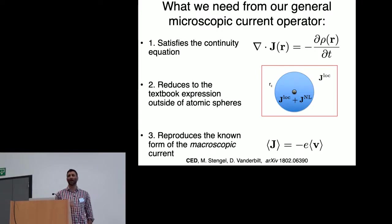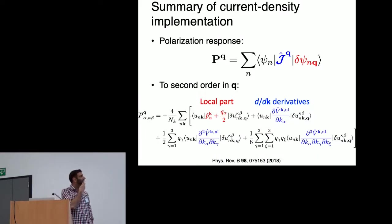Everything is in this paper. But what we can show is that first of all, that form of the current density satisfies the continuity equation. It also reduces to the textbook expression of the current that includes the momentum matrix elements outside of the cutoff sphere where our potential is local. And finally, it reproduces this known form of the macroscopic current, which has to do with the velocity operator. Basically all that it requires is that the current be correct up to second order in Q. So we expanded that form of the current density up to second order. And that resulted in these derivatives of the non-local potential with respect to K. So first order, second order in K are used for other things. And then we had to go to third order in K, third order derivative in K.